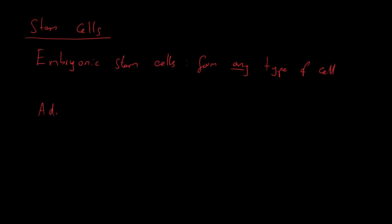There are also adult stem cells, and they are found mainly in the bone marrow. They can only form some types of cells — for example, bone marrow stem cells are used to replace blood cells, which eventually break down and need replacing. However, they will not form things like neurons. Embryonic stem cells, on the other hand, can divide into any type of cell. When you are an embryo, you have embryonic stem cells which differentiate in an ordered fashion to form all the different parts of an organism.